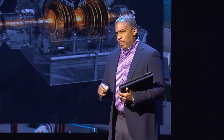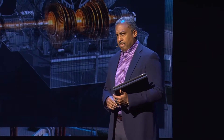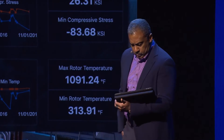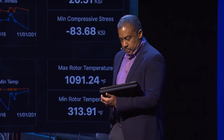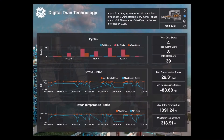What's your operating profile? In the past six months, my number of cold starts is four, my number of warm starts is eight, my number of hot starts is 39. The number of start-stop cycles has increased by 27.5%.